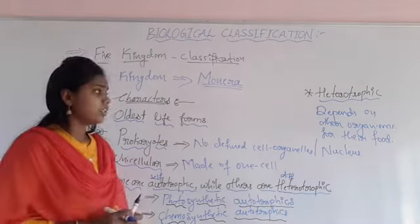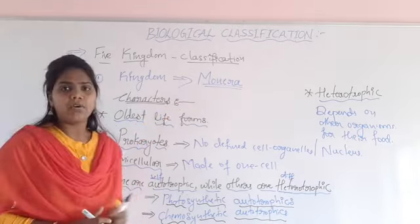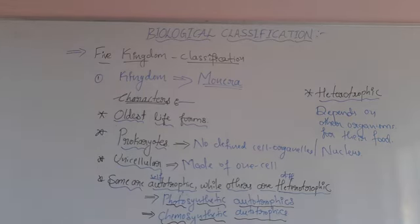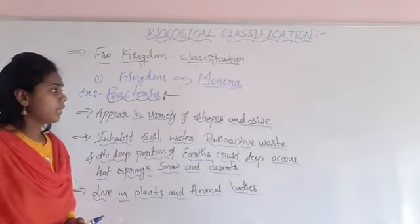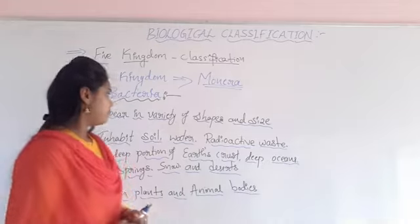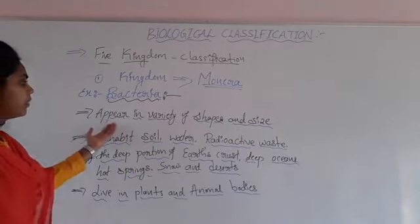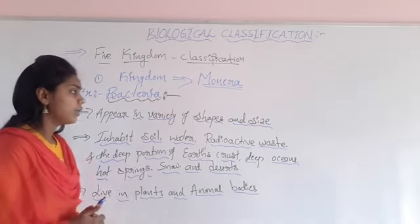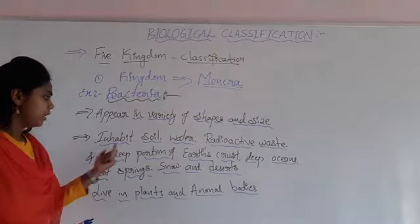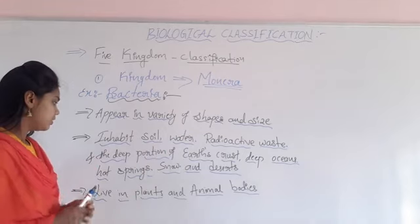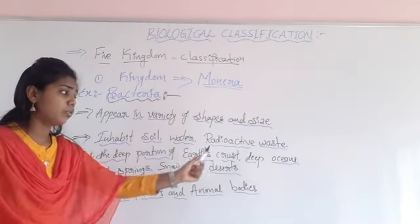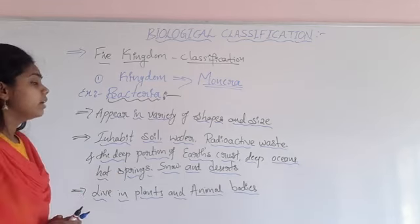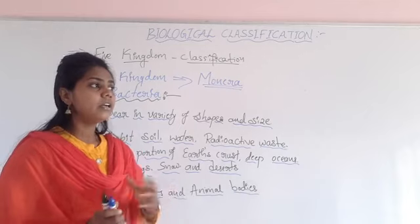Next, about the different shapes of bacteria — bacteria belong to Kingdom Monera. Bacteria appear in a variety of shapes and sizes. They inhabit soil, water, radioactive waste, the deep portions of the earth's crust, deep oceans, hot springs, snow, and deserts. Bacteria are also present as parasites in other organisms.